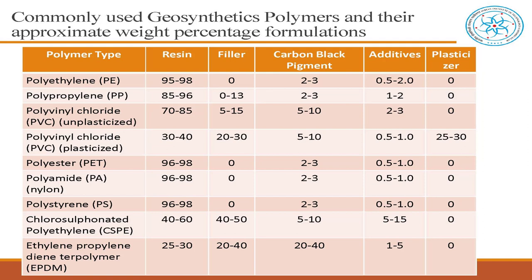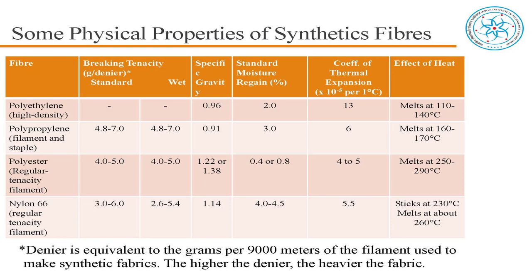The most common polymers are PP (polypropylene), polyester (PET), and PE — specifically HDPE, high-density polyethylene. These are the three or four things to remember along with their characteristics. What is important to note is specific gravity: polyethylene is 0.96 and polypropylene filament and staple is 0.91 — both less than 1.